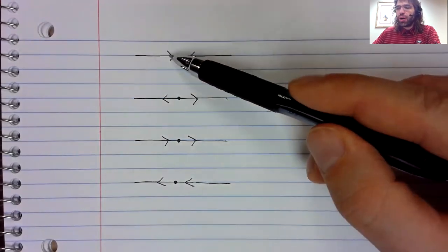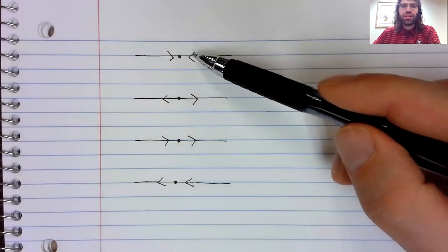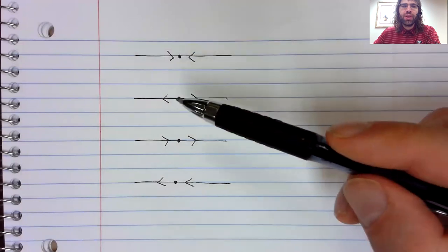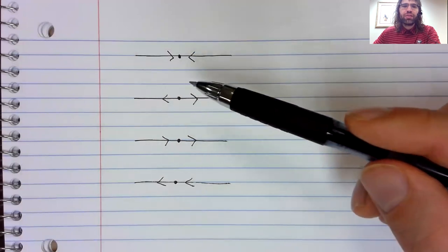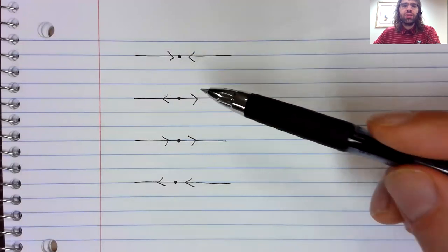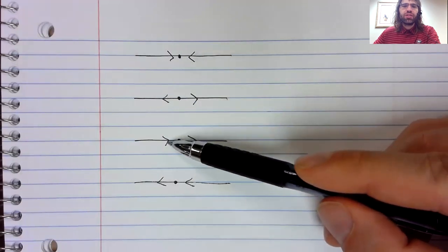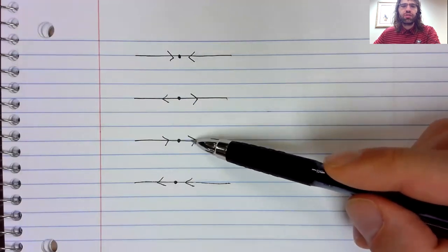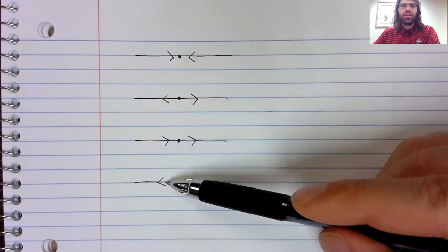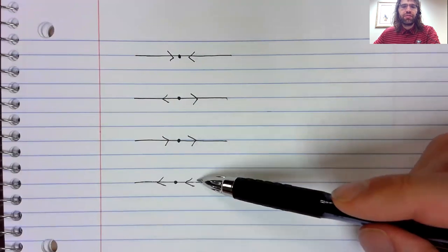The derivative is positive to the left and negative to the right. Negative to the left, positive to the right. Positive to the left, positive to the right. Negative to the left, negative to the right.